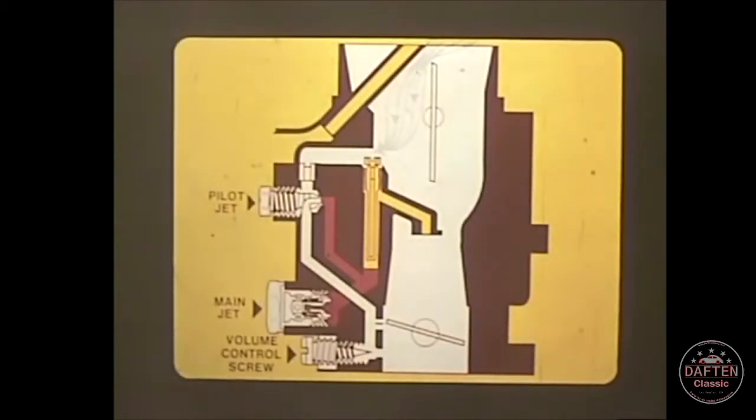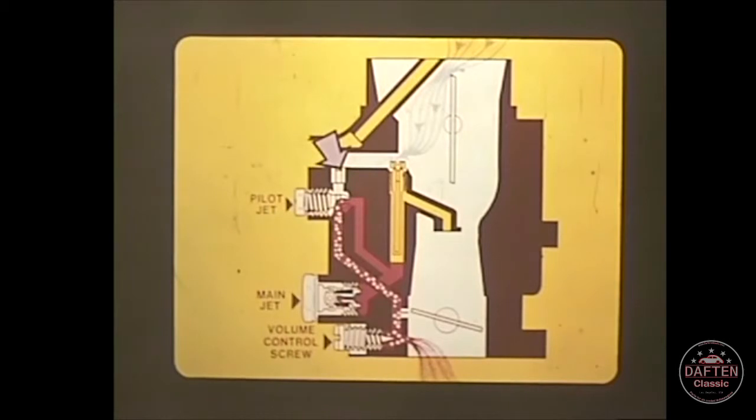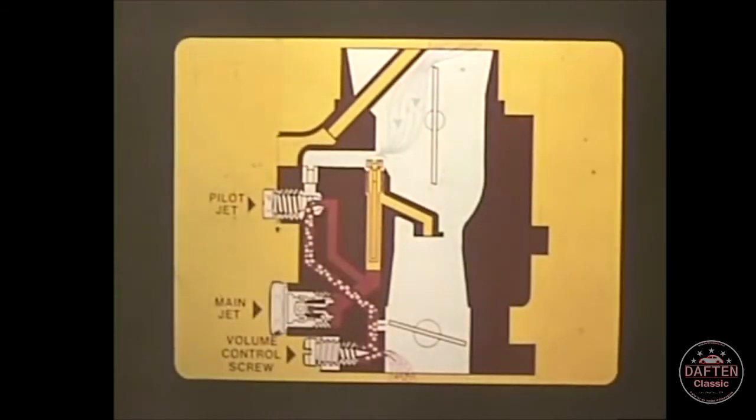This section of the idle circuit diagram shows the fuel about to be mixed with incoming air. The vacuum, which is below the throttle plate at idle, draws fuel from the float bowl through the main jet to the pilot jet. Air for the pilot jet is drawn into the circuit through a calibrated hole at the top of the carburetor. The fuel and air meet and mix at the pilot jet.